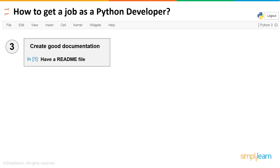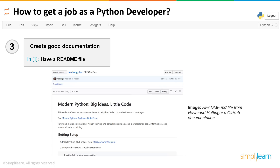Tip number three: create good documentation. This helps with the readability and understandability of your code. One of the main things is having a README file in your GitHub repository. The README file should contain details about your project — what it does, the various libraries used, and so on. This is a great help to anyone trying to learn from or implement your code in a different way.